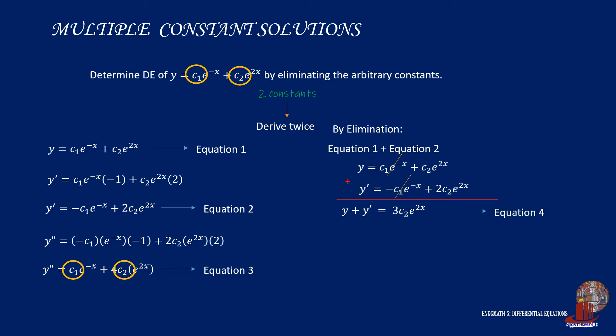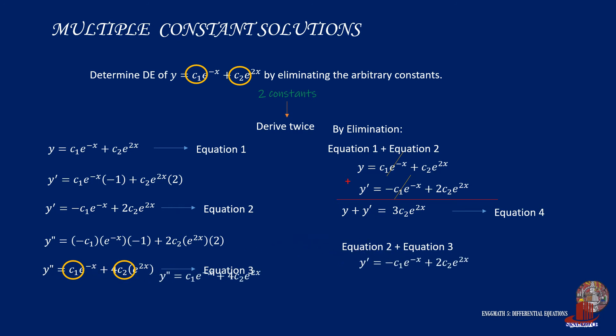We denote this as equation 4. Then combine equation 2 with equation 3. Similarly, the term with c1 will also cancel out, giving y' plus y'' is equal to 6 times c2 times e raised to 2x, which we denote as equation 5.